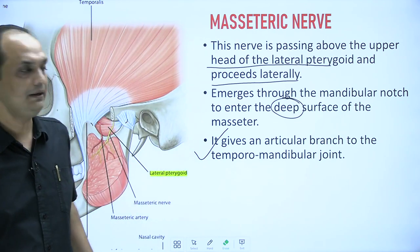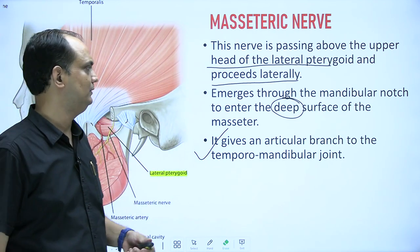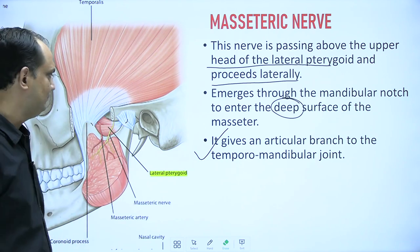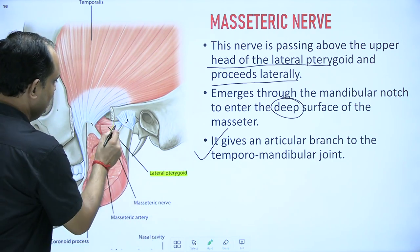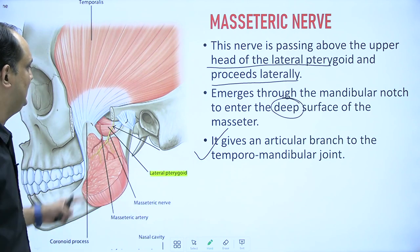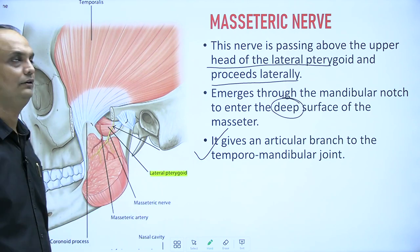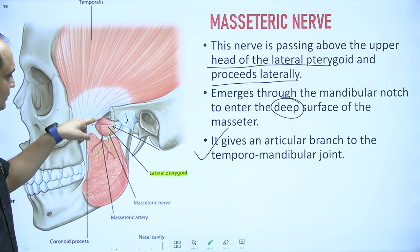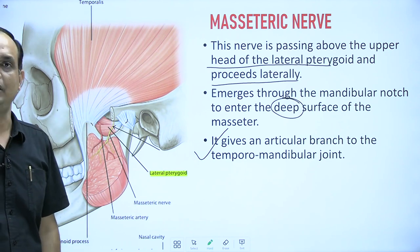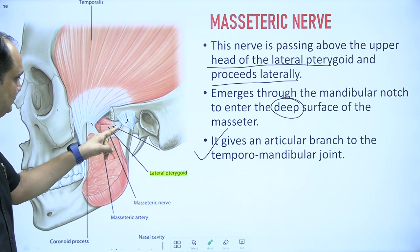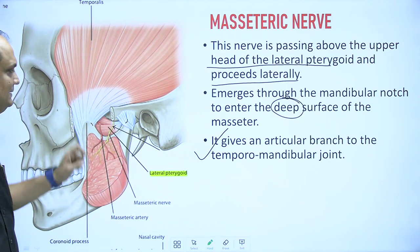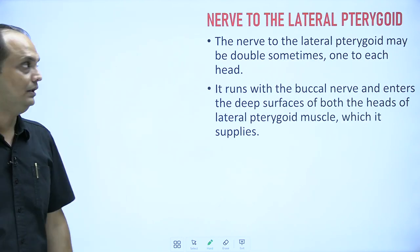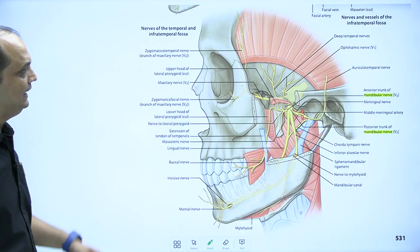This leads to an important exam question: what structures pass through the mandibular notch? The masseteric nerve passes through the mandibular notch. It can be identified by two clues: the nerve exits along the upper border of the lateral pterygoid muscle and passes through the mandibular notch. These are commonly asked image-based exam questions.